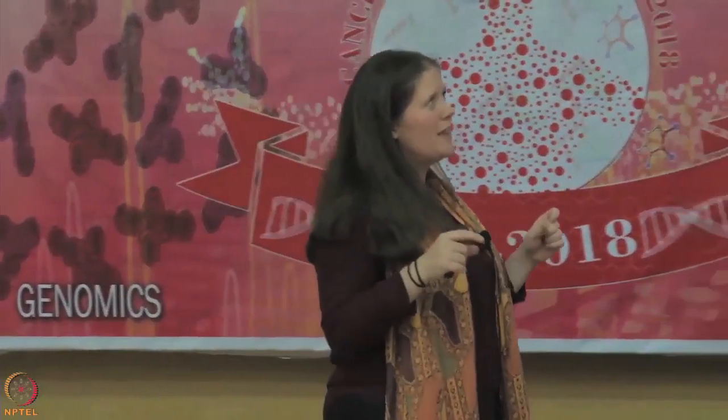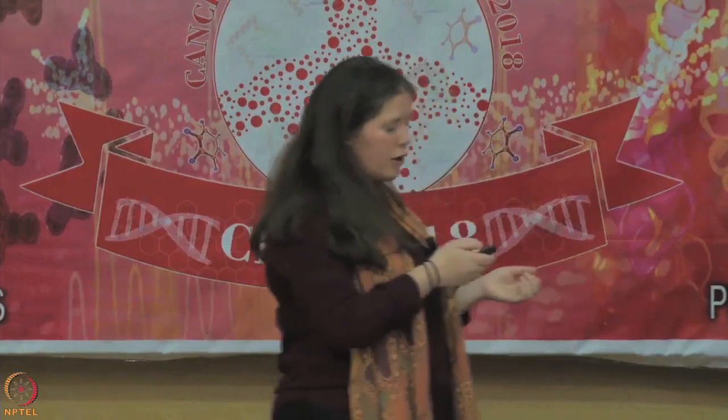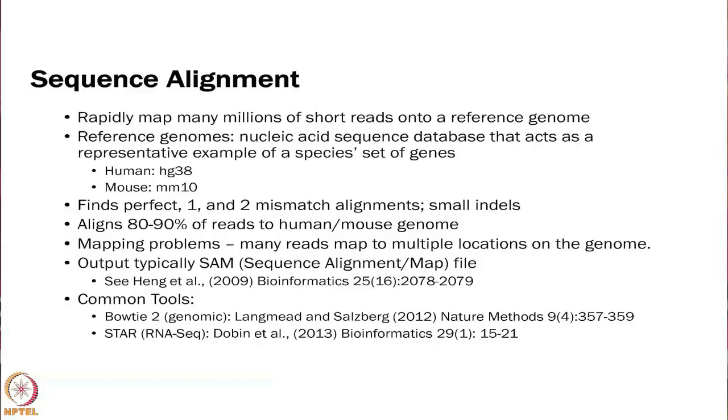The first thing that we do is we have to align these sequences to a reference genome, if a reference genome exists. What that means is you take the short sequences and you match them against a genome that represents whatever species we are looking at. For humans there is a reference genome; the current updated reference genome is HG38, the version before this was HG19, and a lot of things are still in HG19.